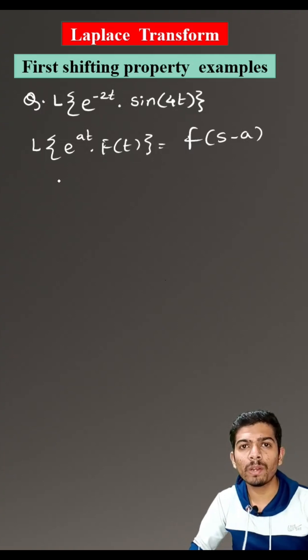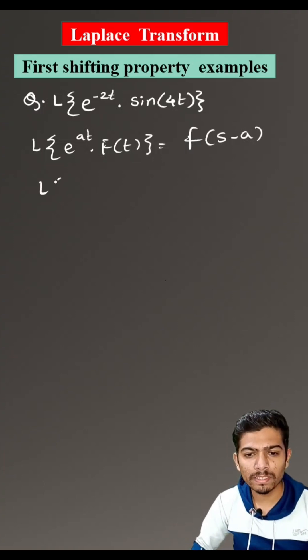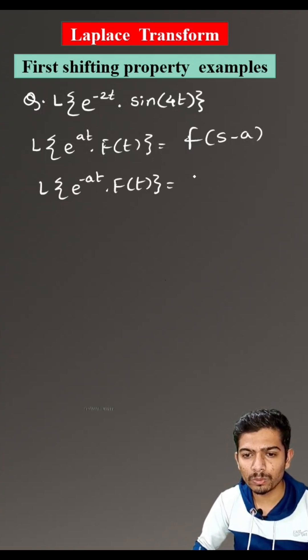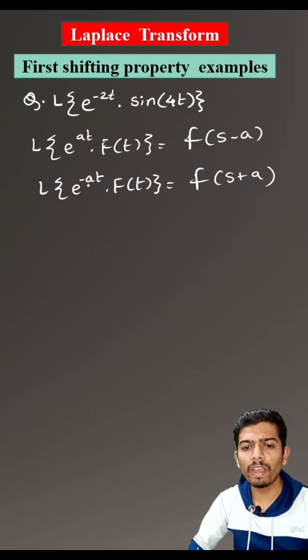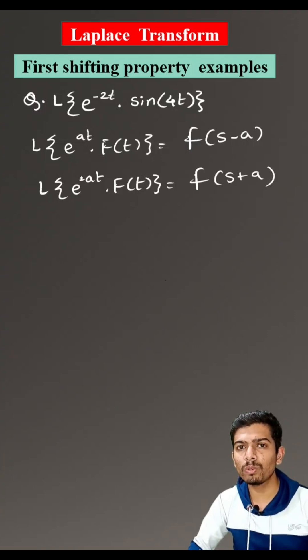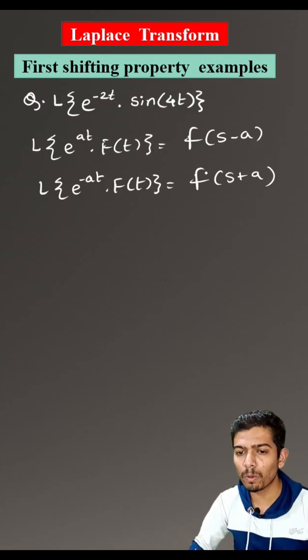Also, if we have a negative sign in the exponent, then the Laplace transform of e raised to minus at into F(t) is equals to f(s plus a). Now, we have a negative sign in the exponent, so we will use this property.